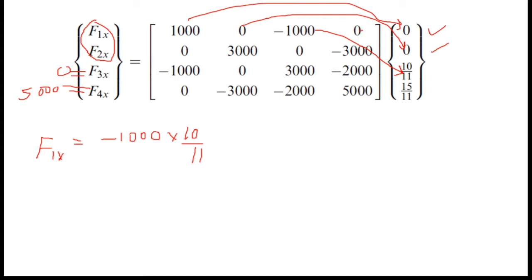Finally, 0 multiplied with 15 over 11 also comes to 0. Then I can get the F1x force as minus 10,000 over 11, and units will be pounds. Now for F2x, I can obtain it by multiplying this row into this column.